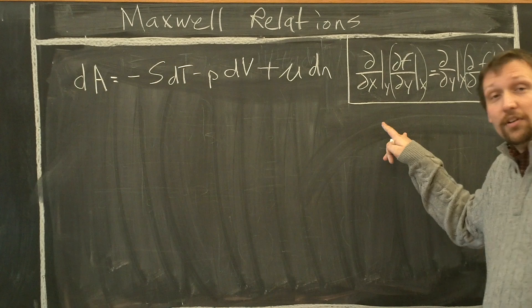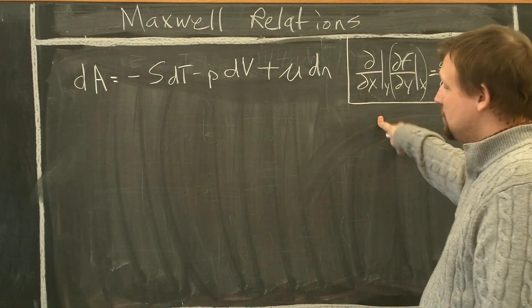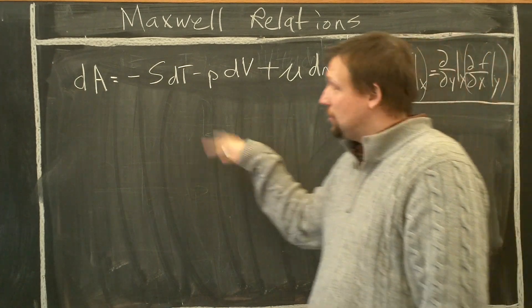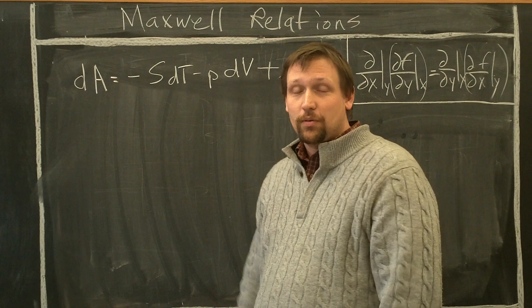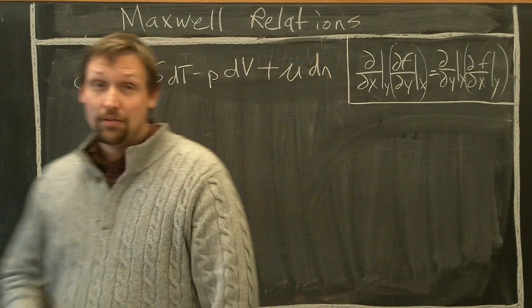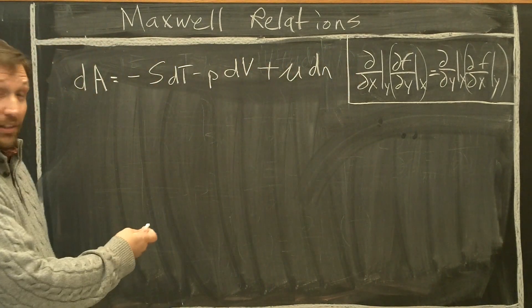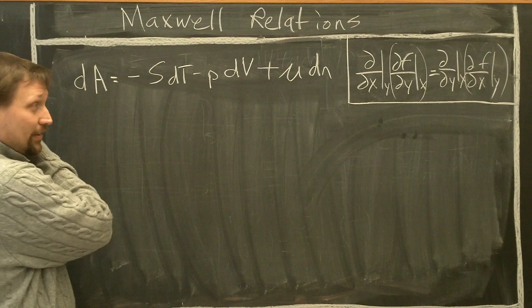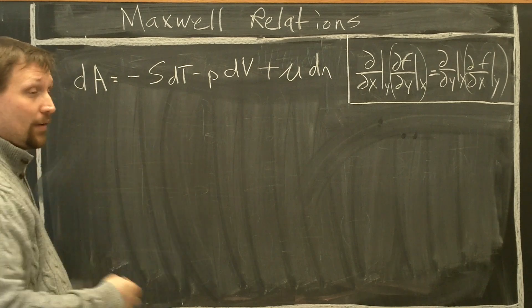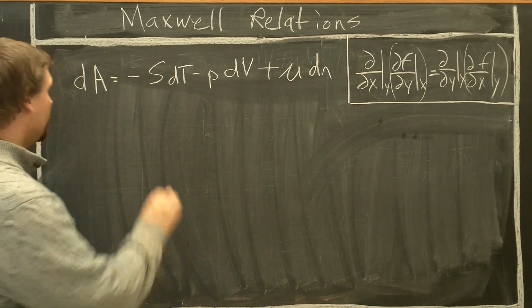So right here is the commutative property, the multivariable calculus that we're going to use to derive the Maxwell relations from A. So why don't we do this? Let's write down the balance equation first using the commutative property, and then we're just going to work through it together.